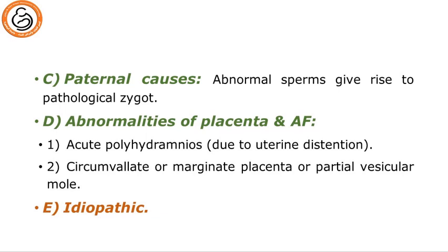Paternal causes: abnormal sperm give rise to a pathological zygote which eventually will end in abortion. Abnormal subplacenta and amniotic fluid: acute polyhydramnios due to uterine distension which initiates uterine contractions expelling the distending contents, circumvallate or marginate placenta, or partial vesicular mole. Finally, if we don't find any cause among the above four major categories, we claim idiopathic miscarriage.